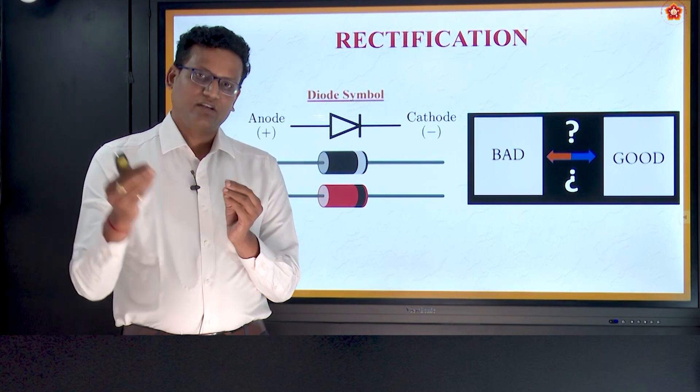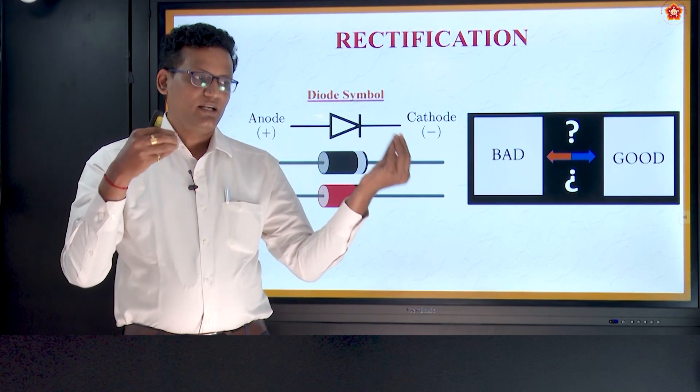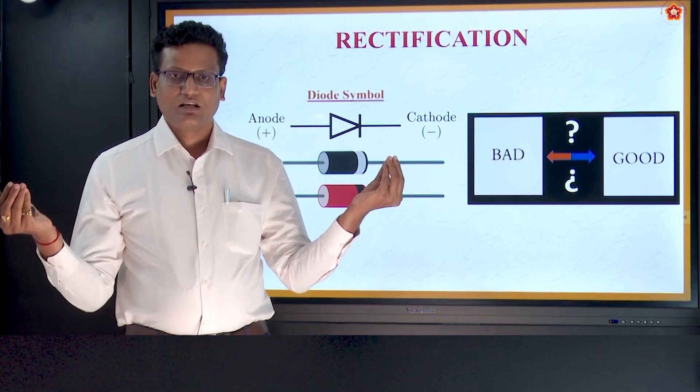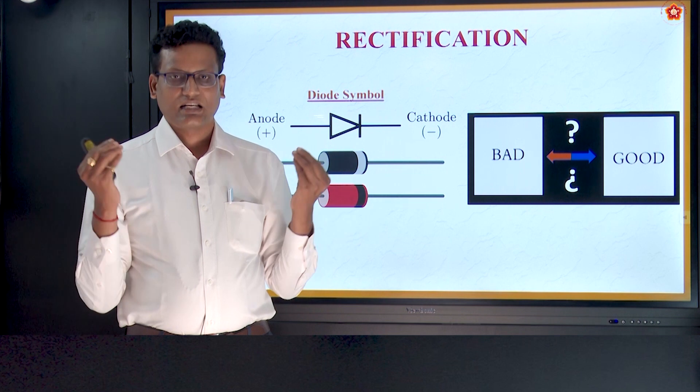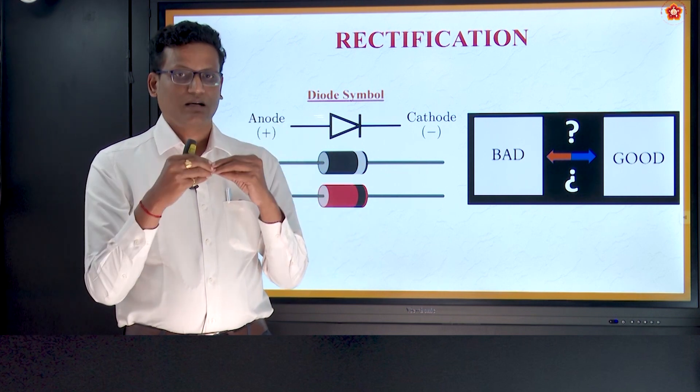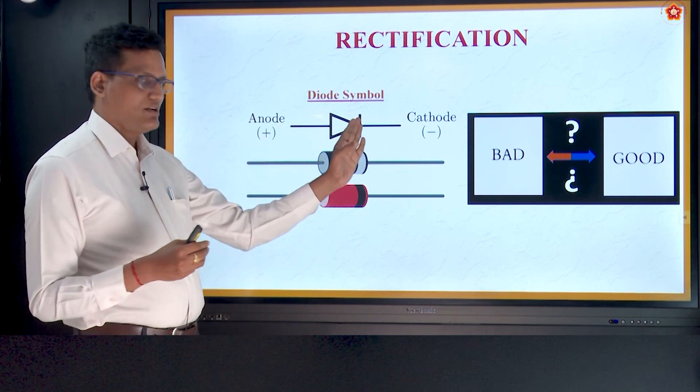So from intrinsic, when we add impurities, we get P-type, N-type. And these are called as extrinsic semiconductor types. And when they are combined, you will form a P-N junction diode.